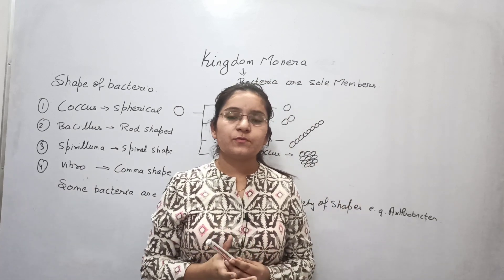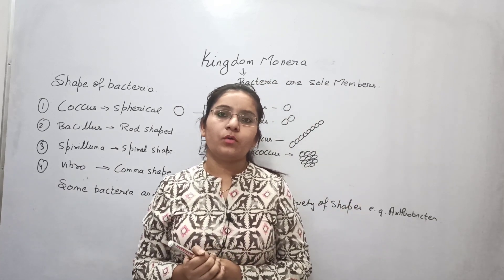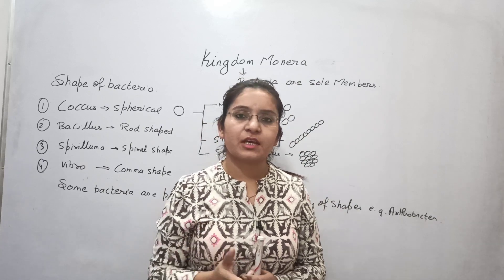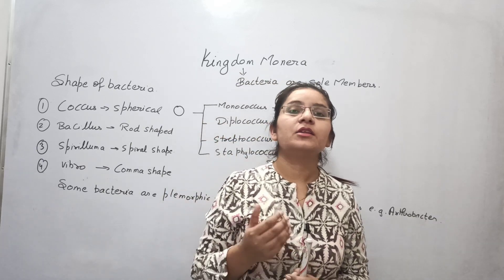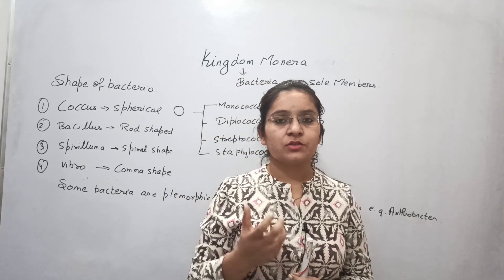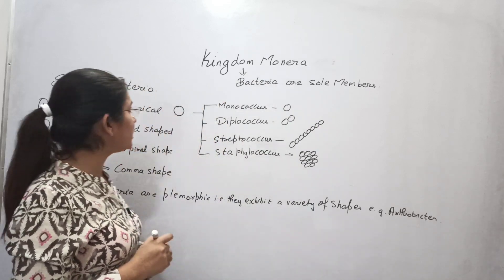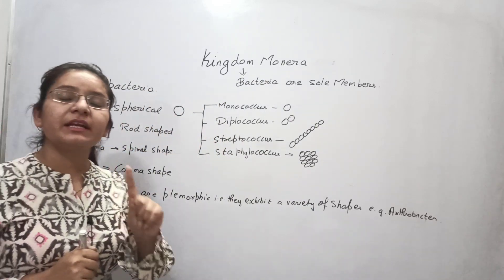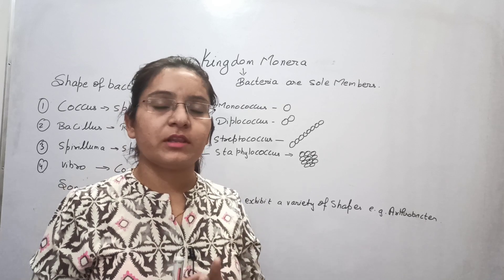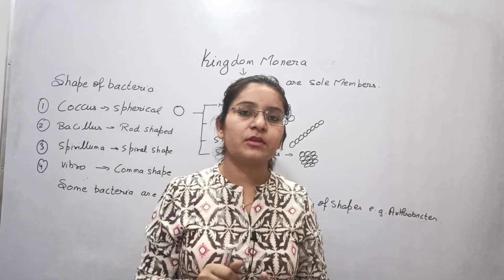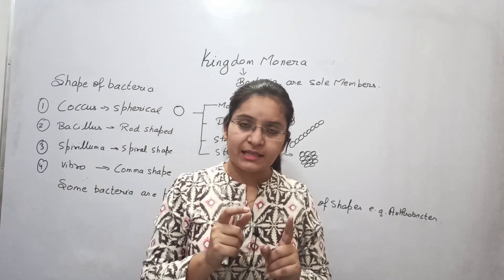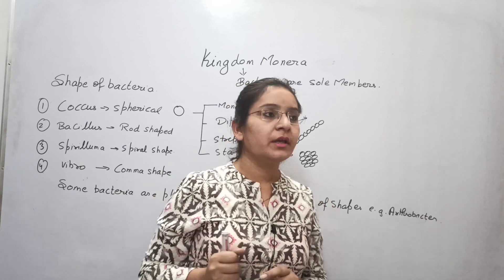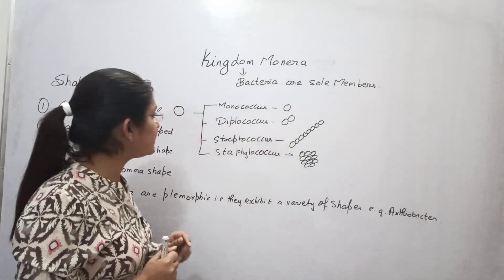Hello students, as we are studying about Kingdom Monera, in this class we will study about the different shapes and the motility of the bacteria. The bacteria gets its shape because of the rigid structure of the cell wall. The outermost layer of the bacterial cell is the cell wall, and that rigid cell wall provides the shape to the bacteria.